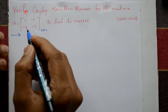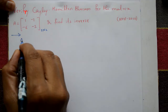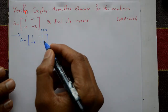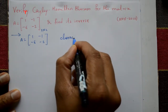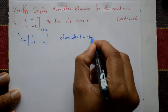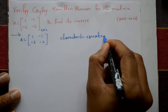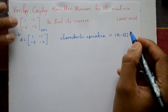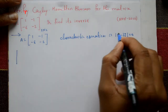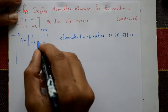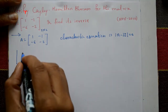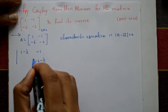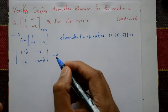The matrix A is given as [[1, -1], [-6, -2]]. The characteristic equation is det(A - λI) = 0. Taking the determinant: A - λI gives diagonal elements (1 - λ) and (-2 - λ), with remaining elements -1 and -6, set equal to 0.